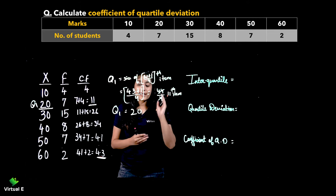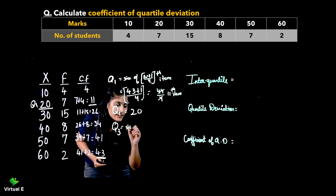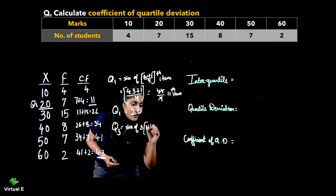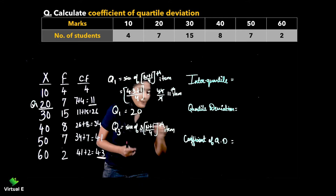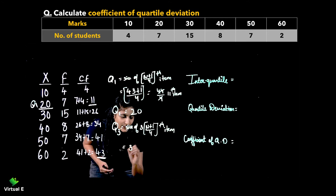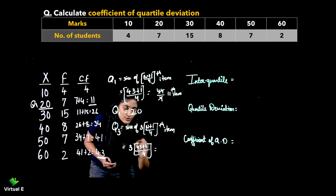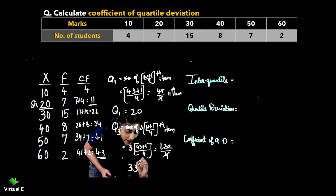We have obtained Q1. Next, we calculate Q3. The formula for Q3 is the size of the 3(N+1)/4th item. So we compute 3 into 43 plus 1 upon 4, which gives 3 into 44 = 132 upon 4, and the final answer is the 33rd item.